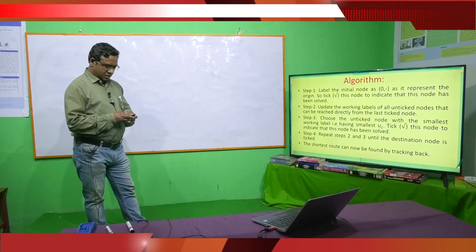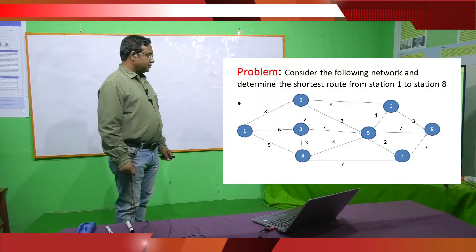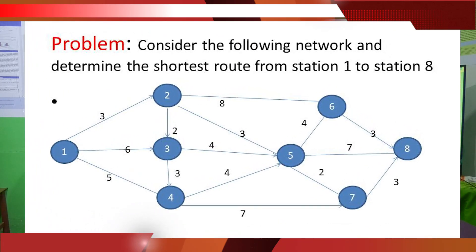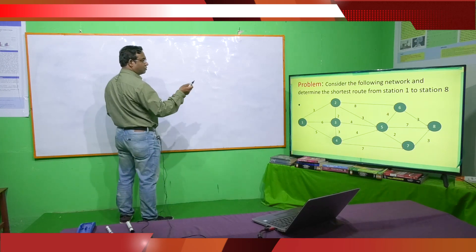Now let us discuss this algorithm with an example. Consider the following network and we have to determine the shortest route from station 1 to station 8. Here there are nodes labeled 1, 2, 3, 4, 5, 6, 7, 8, and all the nodes are linked by routes. Let us find the shortest route from station 1 to station 8.